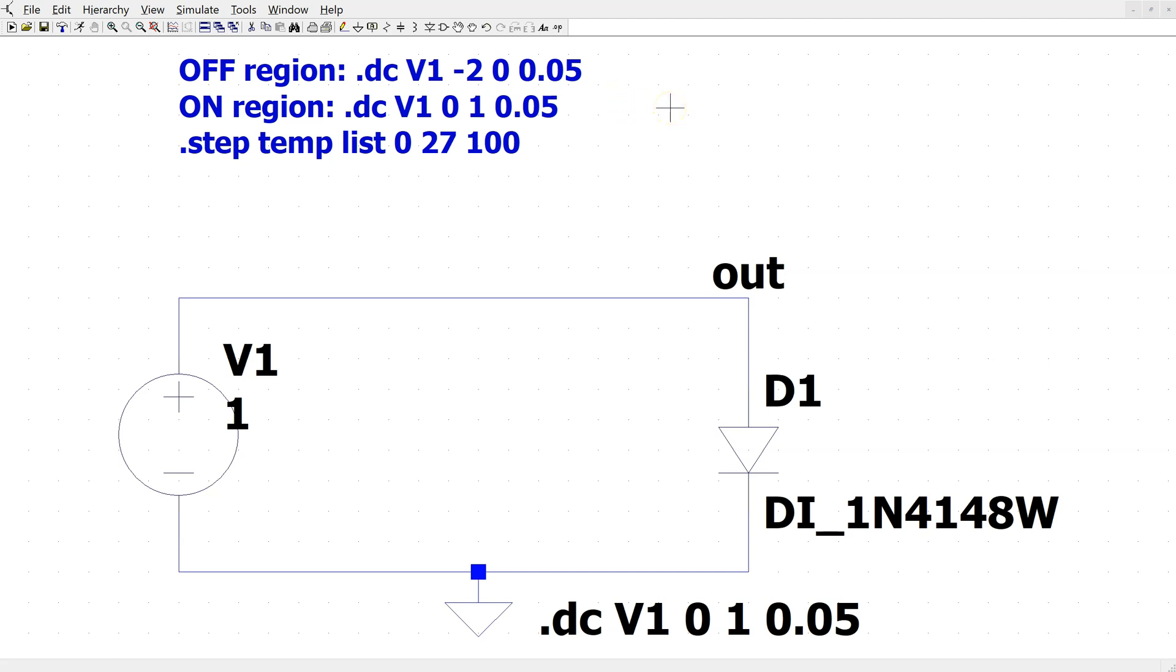We can run DC sweeps as shown here to simulate the ON and OFF characteristics. Note that LTSpice uses a nominal temperature of 27 degrees C by default. We can use an additional SPICE directive as shown here to simulate the characteristics at a desired list of temperatures.